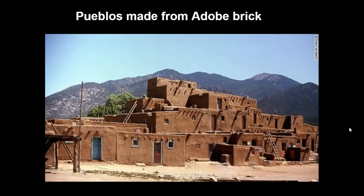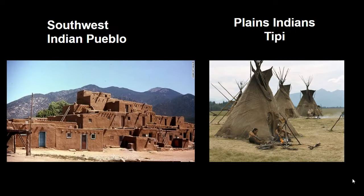Their homes were made from adobe brick, which is sun-dried clay — again using a natural resource, clay and mud, turning it into bricks and building their homes. Let's compare the Southwest Indian Pueblo homes with the Plains Indians' tipis, looking at how and why they're different.